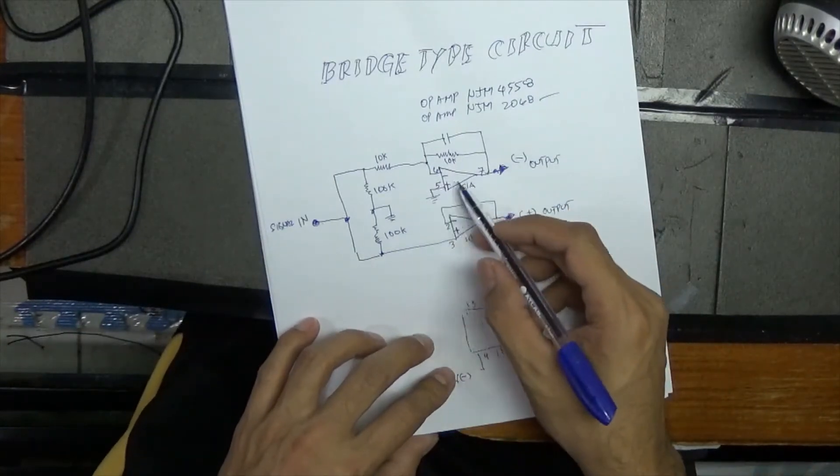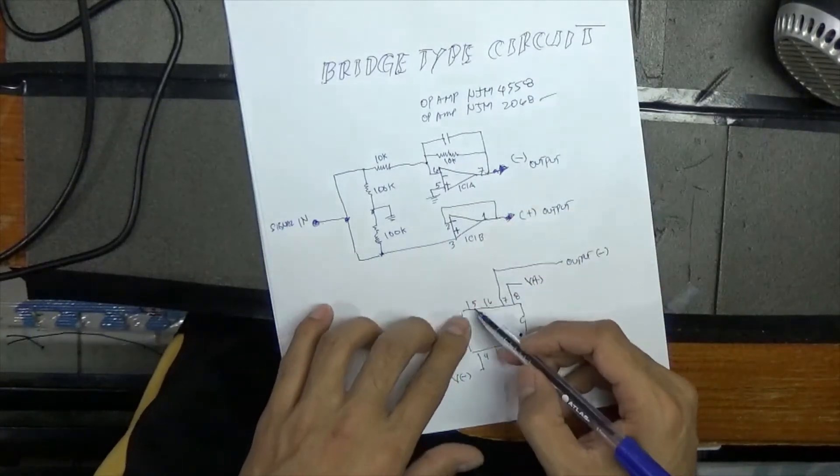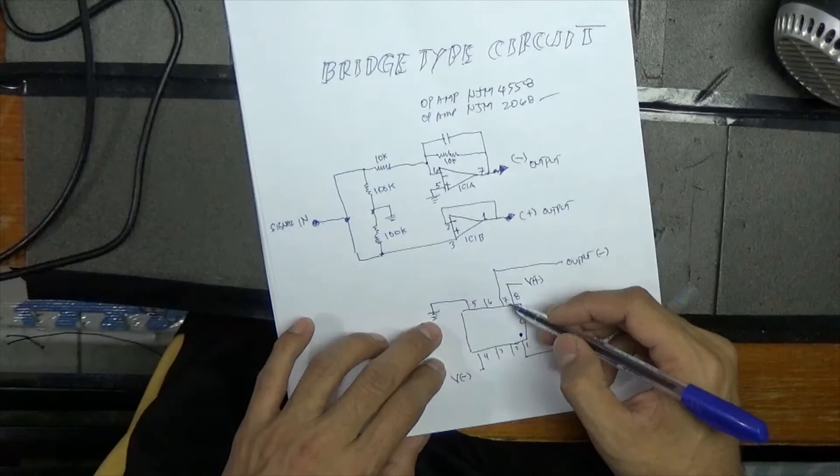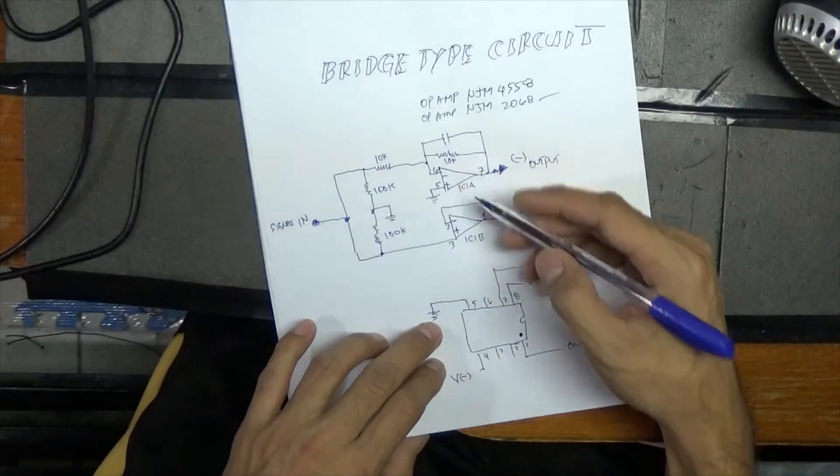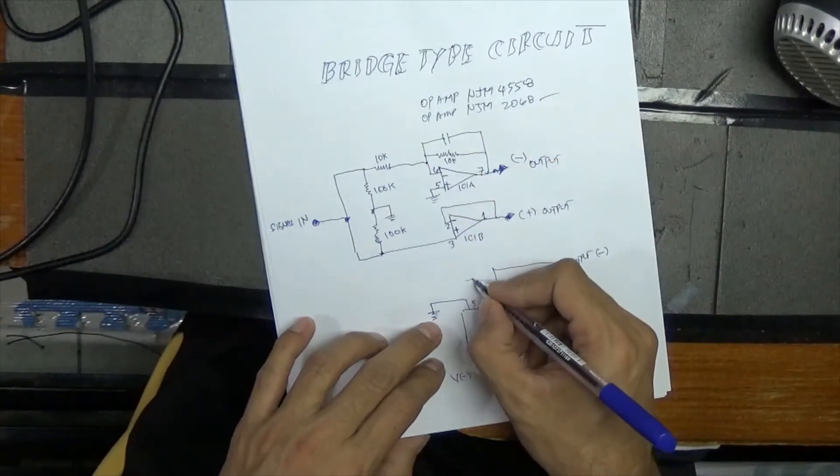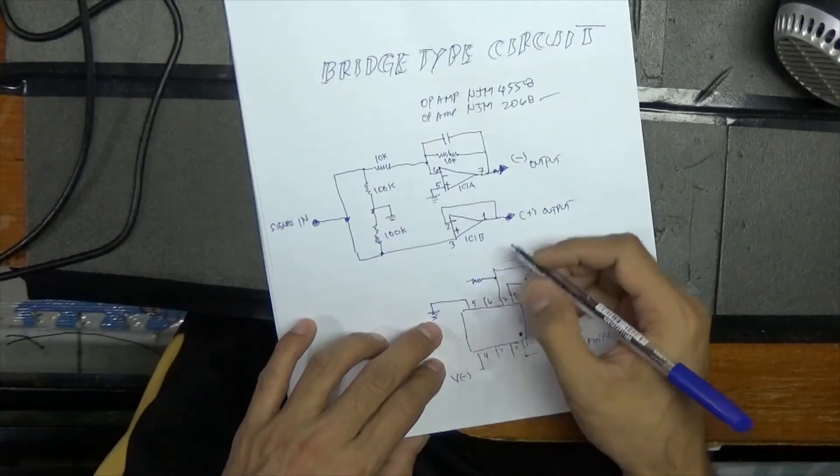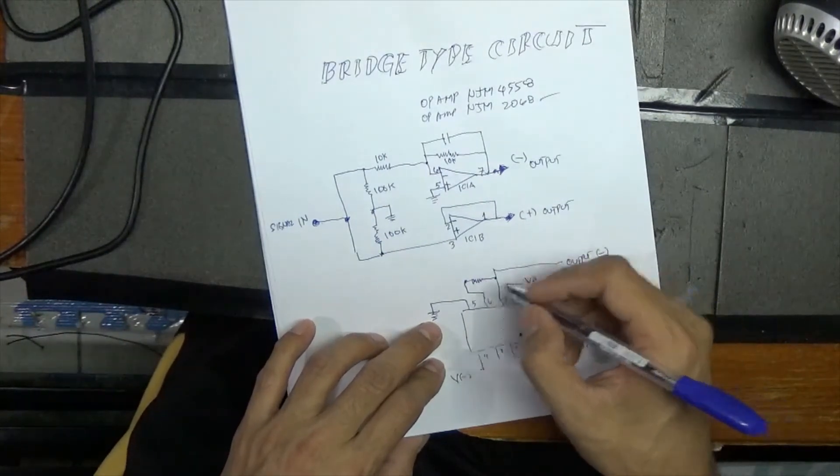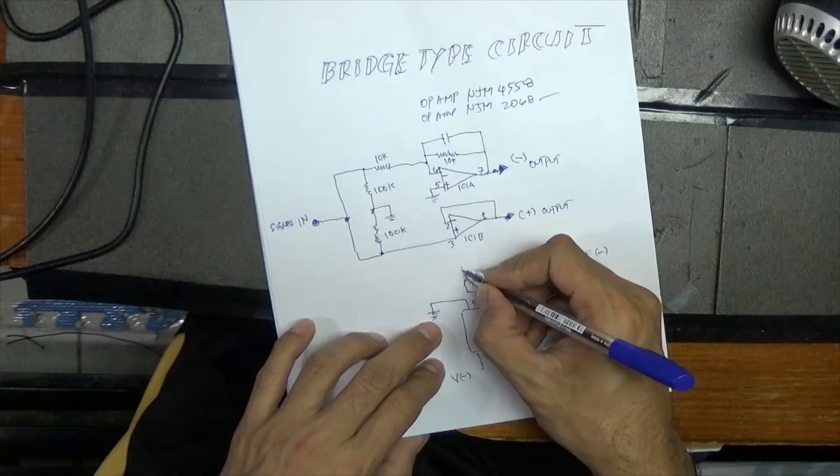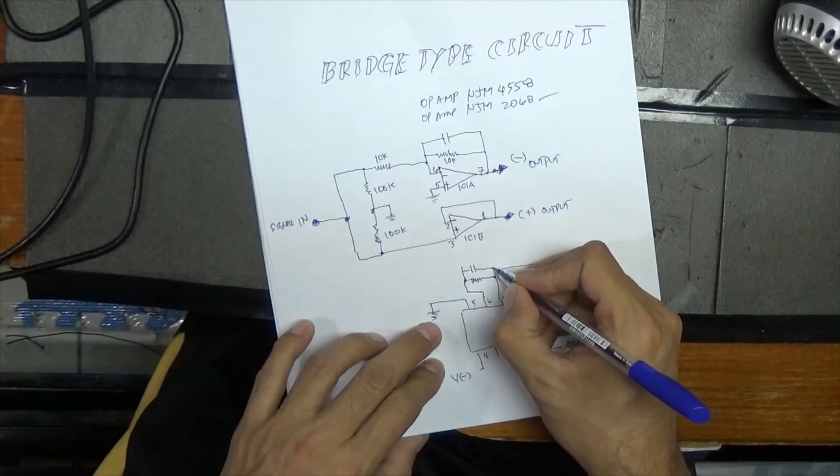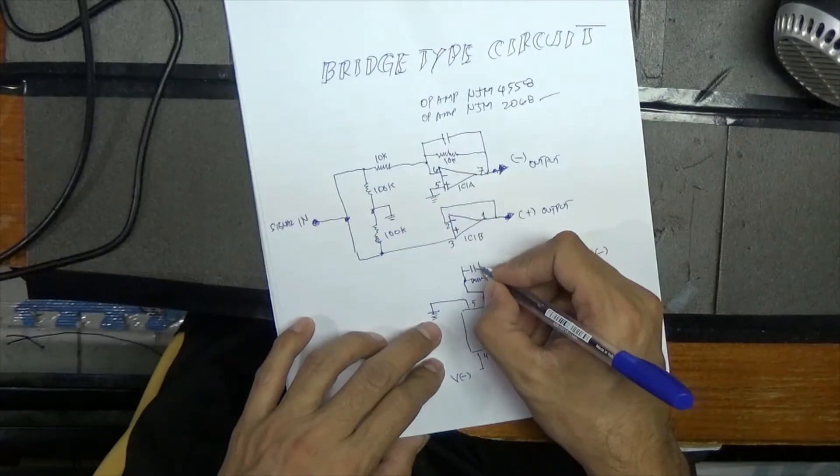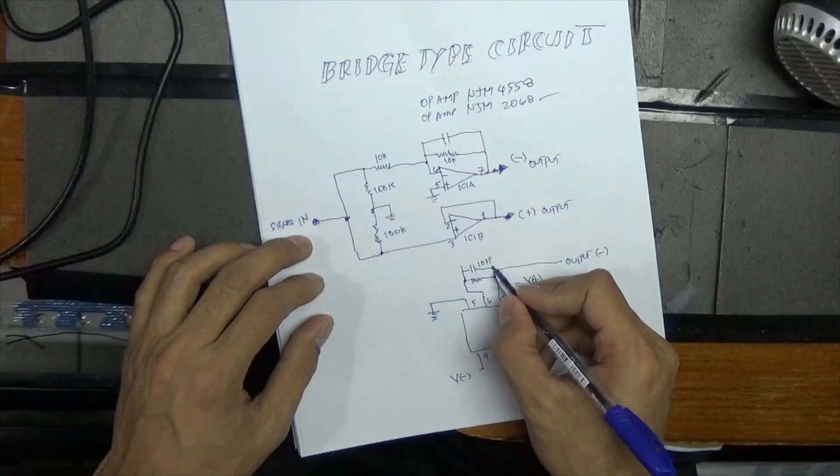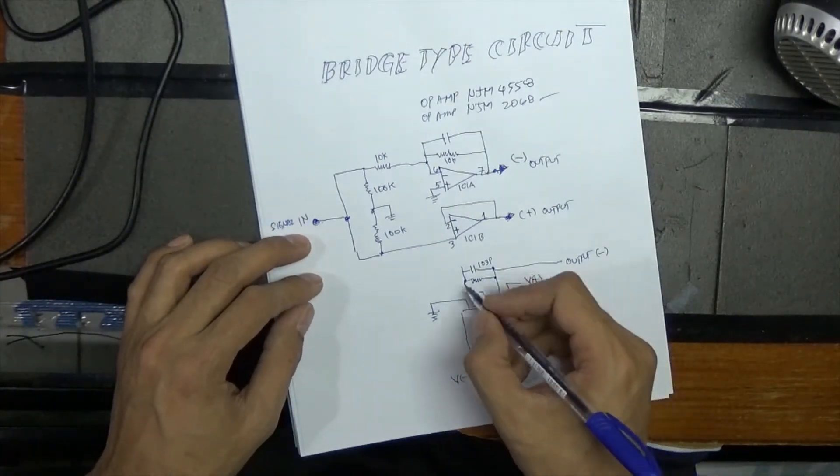Five and six. Five is ground. Six is connected to seven and six is connected to resistor like this. Another one connected to capacitor. This one is 103. Here, 10K.